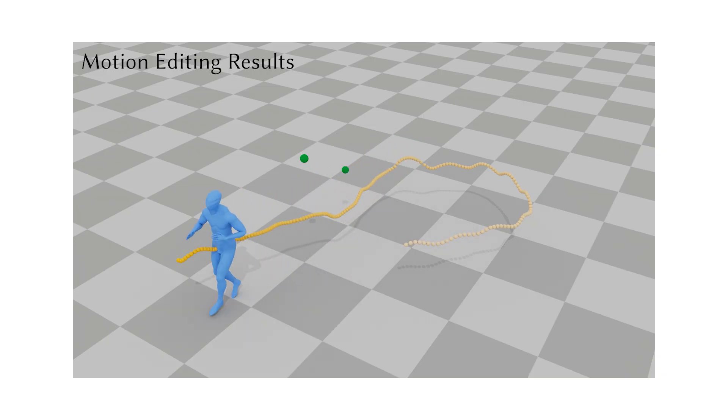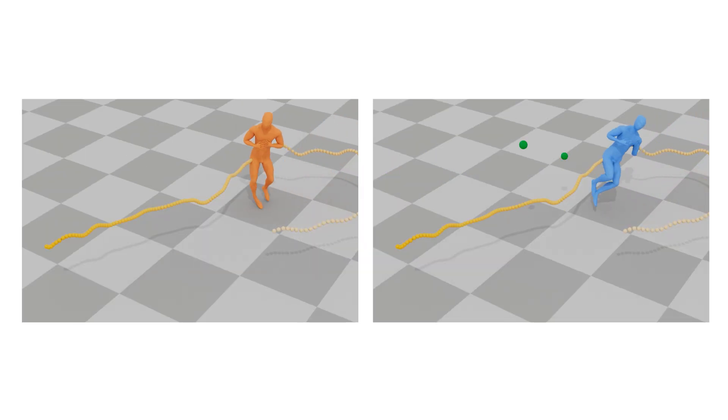This allows the character to perform a kick and a punch. Notably, the modifications are limited to the motion between the adjusted keyframes, and the results faithfully preserve the original motion.